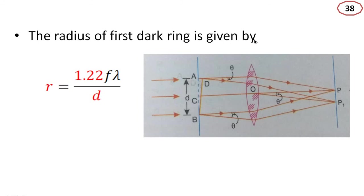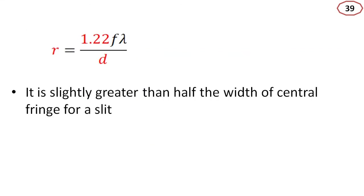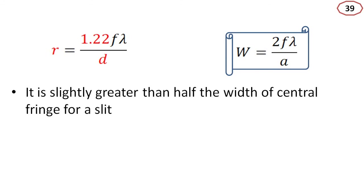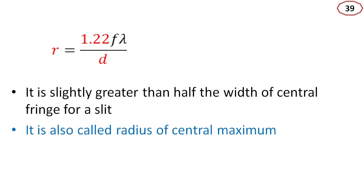The radius of the first dark ring is given by r equals 1.22 f lambda by D, where D is the diameter of the aperture. This is slightly greater than half the width of the central fringe for a slit, where half-width equals f lambda by a. In this case, a is replaced by D, the diameter of the aperture. So the radius is f lambda by D, and it is also called the radius of the central maximum.